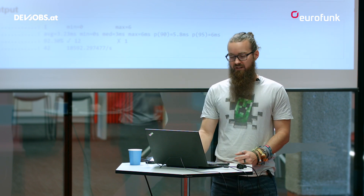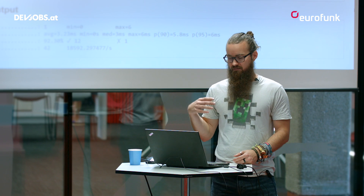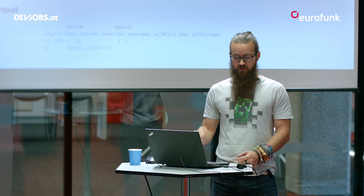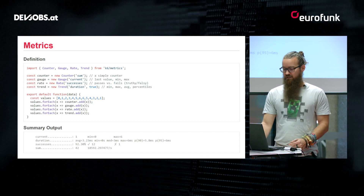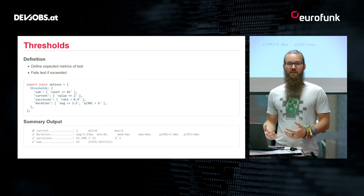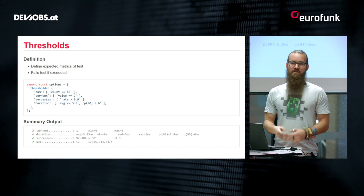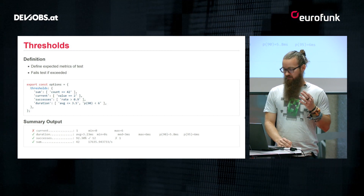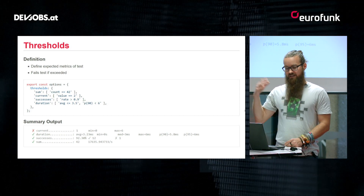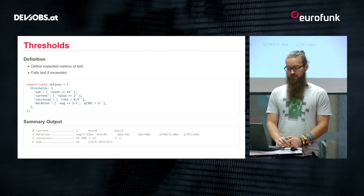Metrics are rendered differently by type. For a counter it's just a number with a per-second rate. For trends it shows average, minimum, percentiles, median, and maximum response time — all configurable. For a gauge it's simply the last known value. Once you have metrics, you can apply thresholds on a global level. For example, you can fail the test if the average response time exceeds 100 milliseconds, or if a rate drops below five percent. Thresholds are rendered in the summary with red crosses for failures or green check marks if within limits.